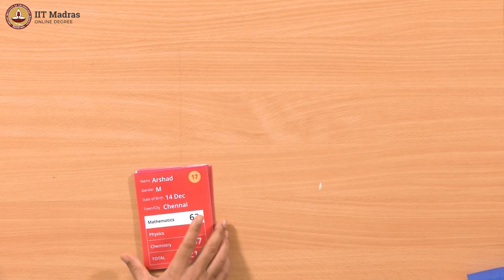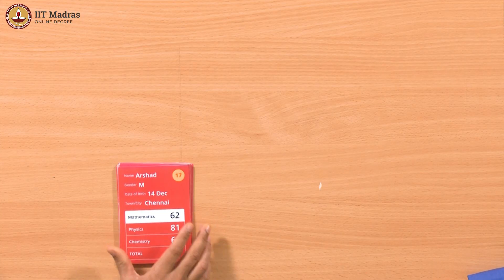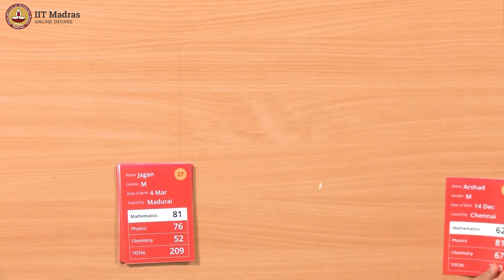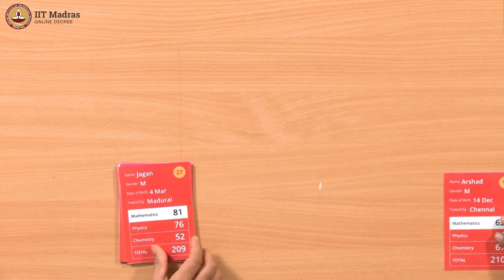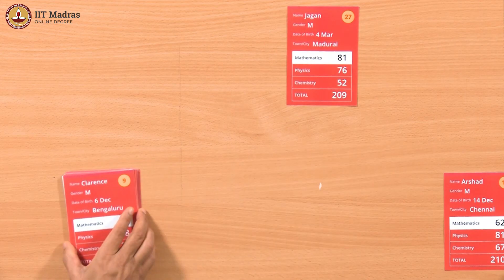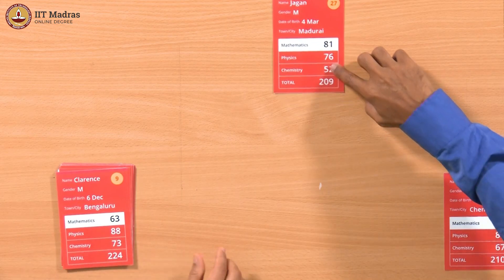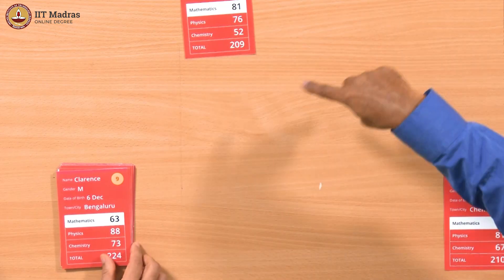Let us try that. So first we do the binning. We will create bins in order of months. Let us put them in order - if you take 4 per row and 3 rows, so January, February, March, April and so on. December, let us keep it here. March, let us keep it there - just roughly keeping the place according to the month.